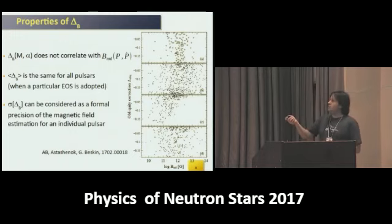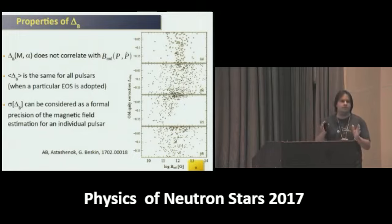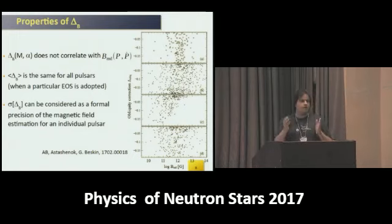If so, we can consider the width of the delta B distribution as a formal uncertainty of our magnetic field estimation. This is what we want to use in statistical analysis.